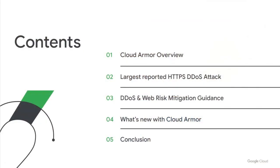Today we'll start with a quick overview of Cloud Armor before jumping into details and analysis of the 46 million requests per second attack we recently disclosed. After that, we'll share practical guidance on how you can assess and mitigate DDoS and web risk on internet-facing web applications and services. We'll conclude with a few updates about recently launched features and capabilities to help you protect your applications.